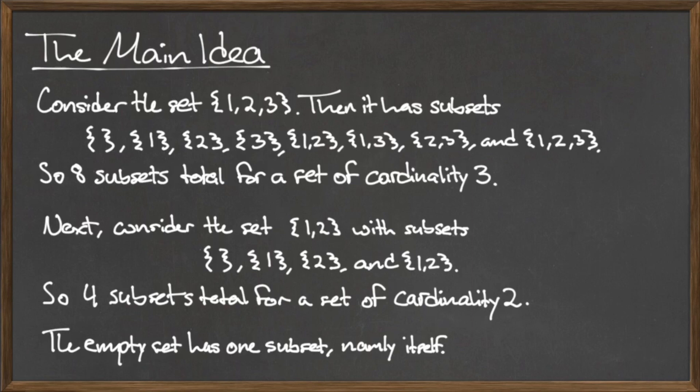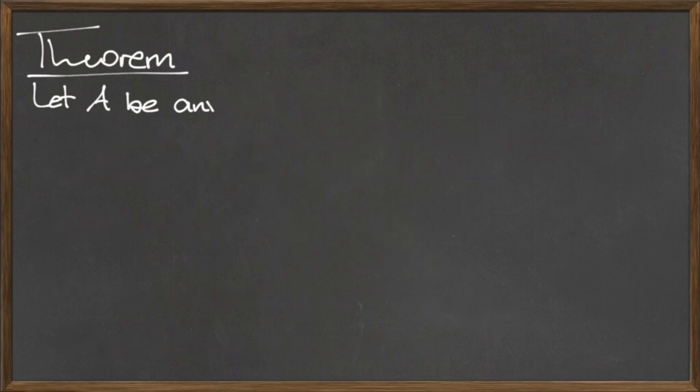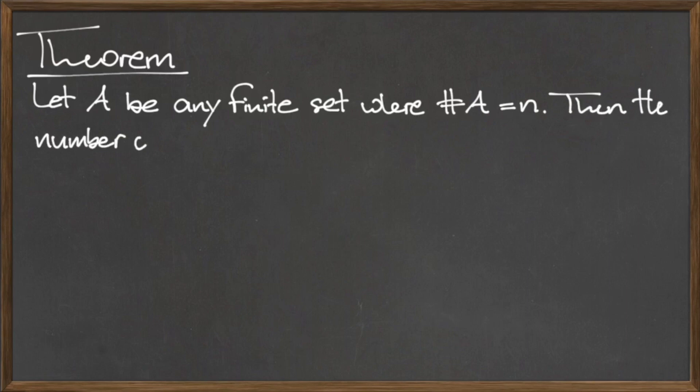If you weren't able to guess the pattern, or want to confirm that your guess is correct, consider the following theorem. Let A be any finite set with the cardinality of A equal to n. Then, the number of subsets of A is given by 2 to the nth power.